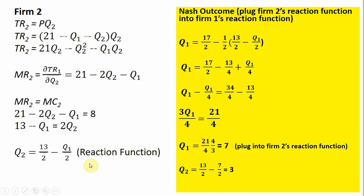If you wanted to find the Cournot-Nash equilibrium, I did the math over here on the right. And what you can simply do is take Firm 2's reaction function and plug that into Firm 1's reaction function. So Firm 1's reaction function was given by 17 divided by 2 minus 1 half times the output of Firm 2.